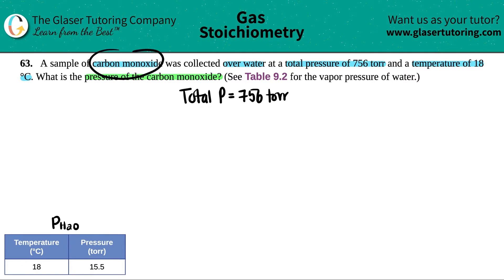So in our total pressure, this consists of two different things: the carbon monoxide (CO) and the water. Since it's collected over water, there is some pressure from the water.